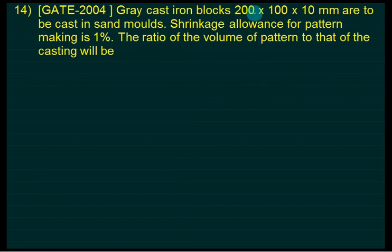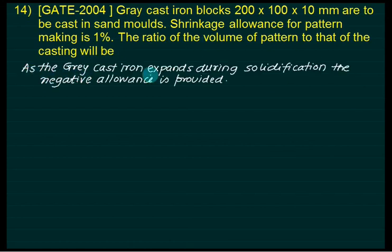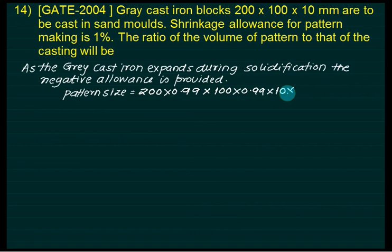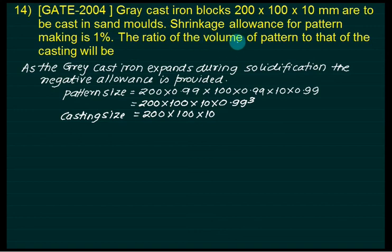Problem: A gray cast iron casting of 200 × 100 × 10 mm is to be cast. The shrinkage allowance for pattern making is 1%. Find the ratio of the volume of pattern to that of casting. Since gray cast iron expands during solidification, a negative allowance is provided. The pattern dimensions are each reduced by 1%, so each dimension is multiplied by 0.99. The ratio of volume of pattern to volume of casting = 0.99³ ≈ 0.97.